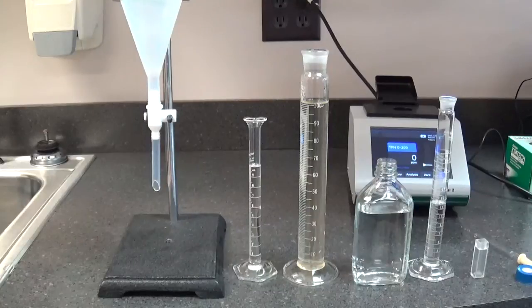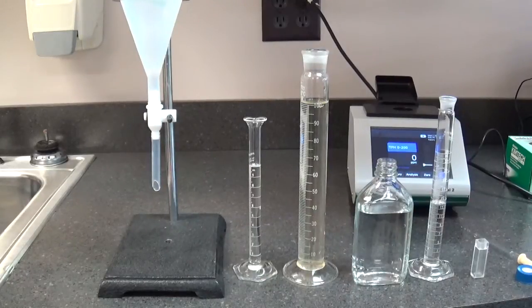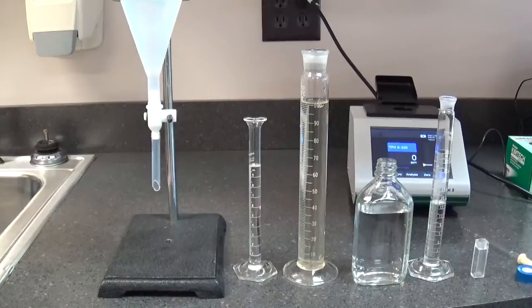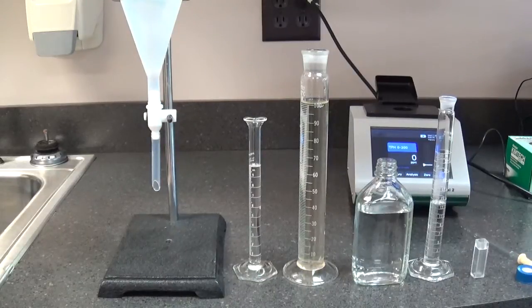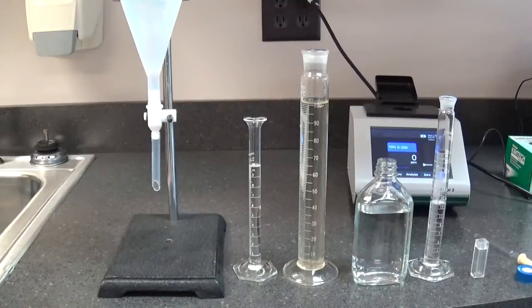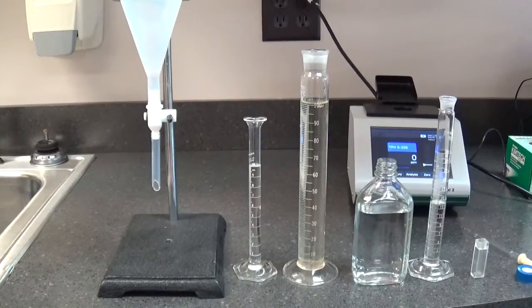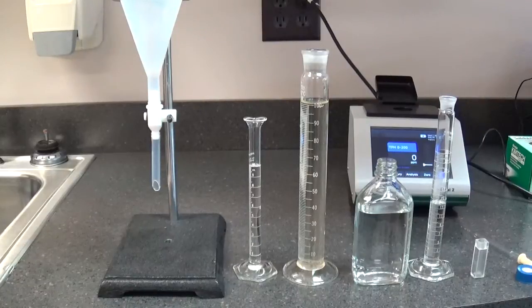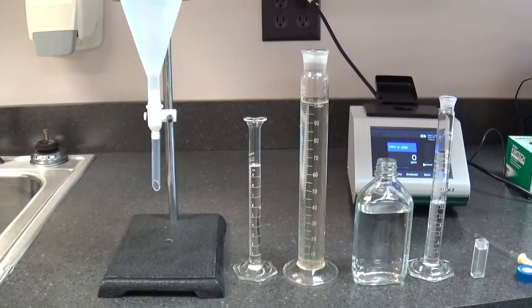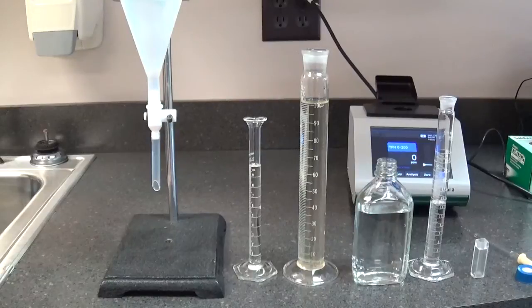Sample analysis. Make sure all glassware is clean. Any residual hydrocarbons in the glassware and sampling containers will be extracted and added to the TOG or TPH readings. Glassware cleanliness can be checked by rinsing it with solvent and then put the solvent rinse in the quartz cuvette and make sure it reads zero. Any positive reading means your glassware is not clean.